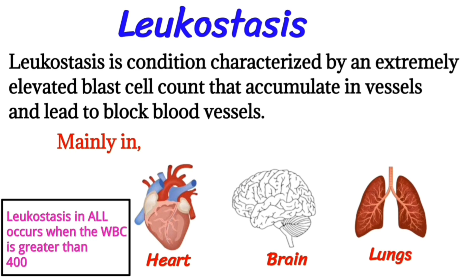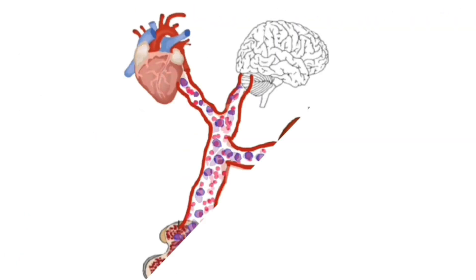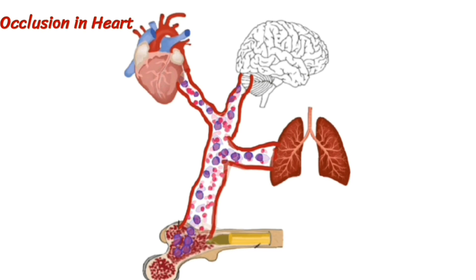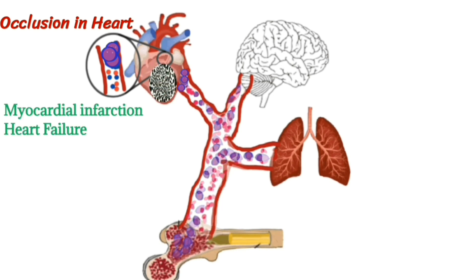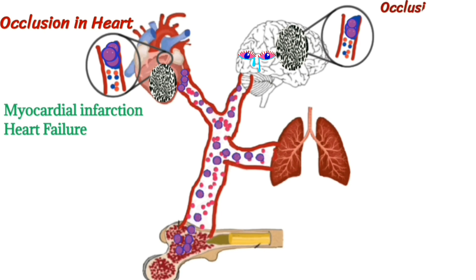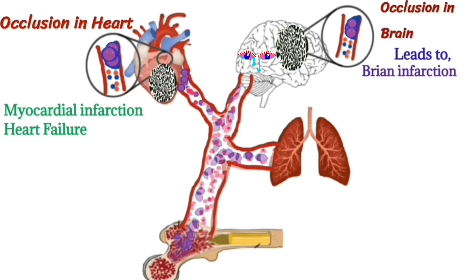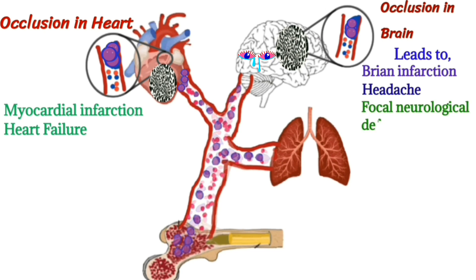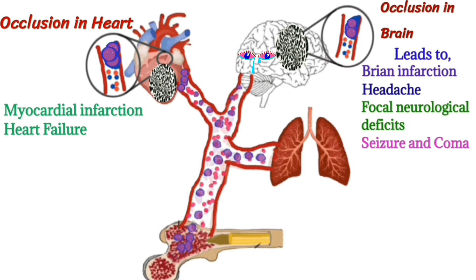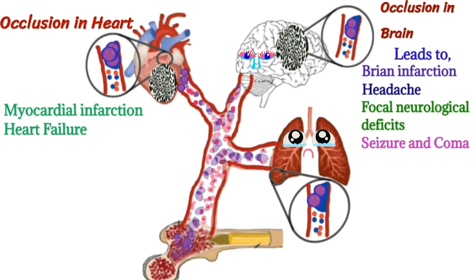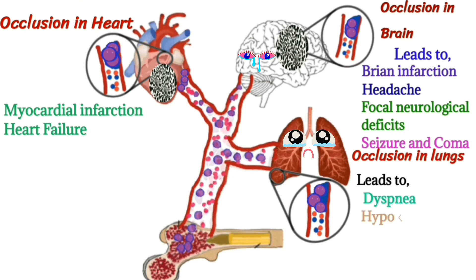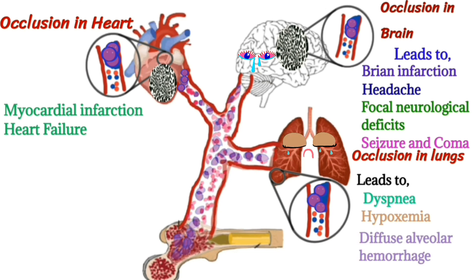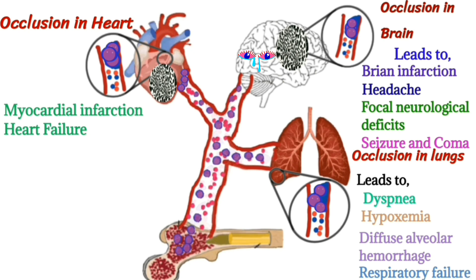Leukostasis typically occurs when the white blood cell count is greater than 400,000. Occlusion in the heart may lead to myocardial infarction and heart failure. Occlusion in the brain may lead to brain infarction, headache, focal neurological deficits, seizures, and coma. Occlusion in the lungs may lead to dyspnea, hypoxemia, diffuse alveolar hemorrhage, and respiratory failure.